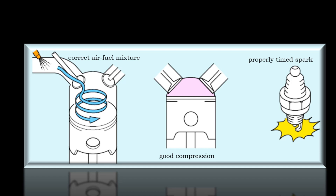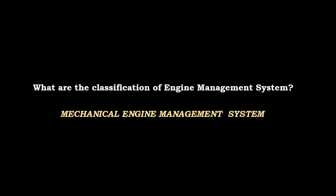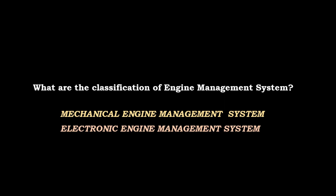The third element required for the engine to produce power is good compression — the compression of the air and fuel mixture. As the piston moves up with both intake and exhaust valves closed, the greater the compression, the greater the power produced. Any component that affects the delivery or control of the air-fuel mixture and the timing of the spark is part of the engine management system. Engines using mechanical components are called mechanical engine management systems — examples include carburetors and distributors with vacuum and centrifugal advancers. Engines using computer control are called electronic engine management systems.